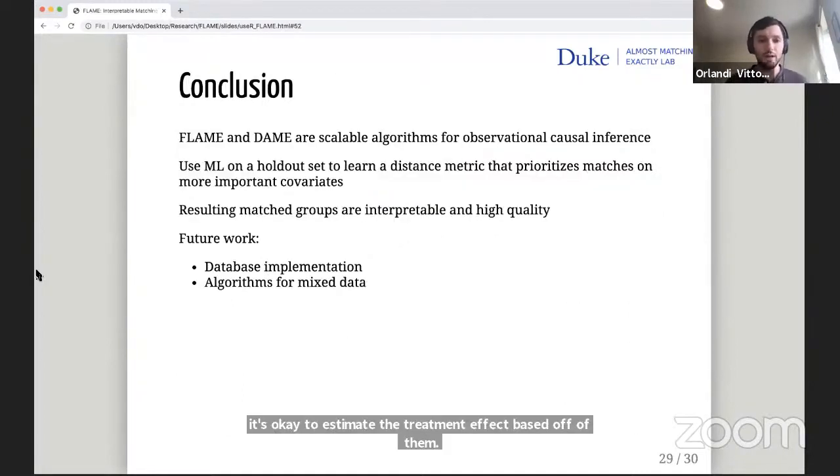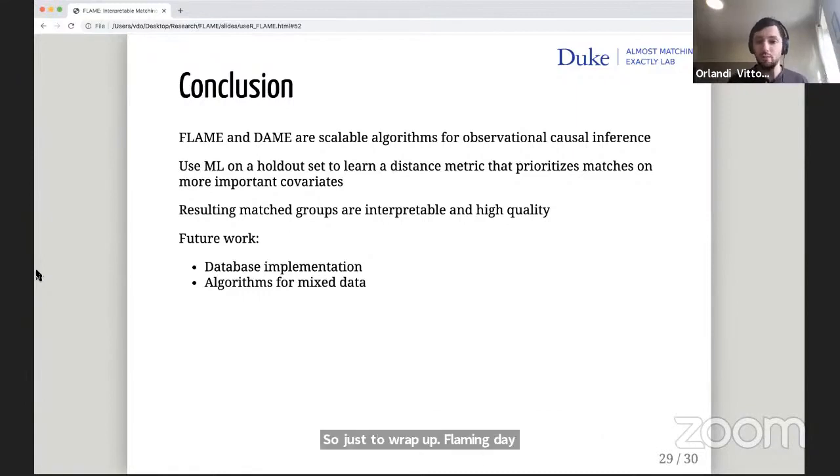So just to wrap up, Flame and Dame are scalable algorithms for observational causal inference. They use machine learning on a holdout set to learn a distance metric that prioritizes matches on more important covariates. The resulting match groups are interpretable because matches are made directly on covariate values, and they're high quality because those covariates are ones that are more important for the outcome. Future work in the package is going to focus on the database implementation. Flame is pretty scalable. I ran it on this dataset with half a million observations, but the full dataset doesn't fit in memory. So the database implementation will handle that. And then algorithms for mixed continuous and discrete data.